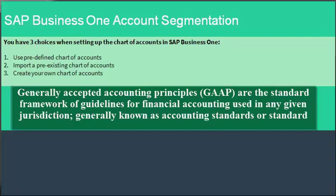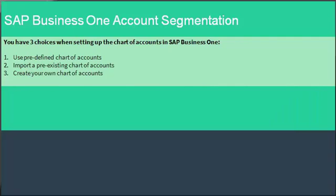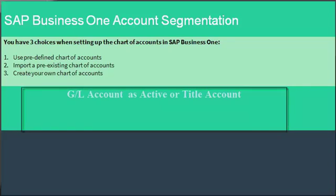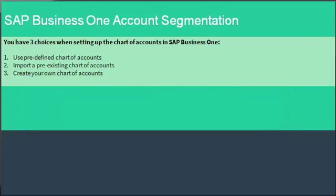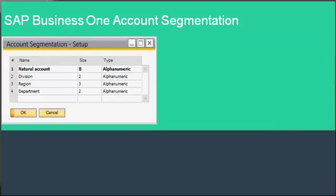These drawers, defined by SAP Business One and cannot be changed, organize your accounts by level in a logical fashion appropriate for financial accounting and reporting. In the Chart of Accounts window, SAP Business One asks you to characterize every GL account as either a title account or an active account and identify its level, because only active accounts can be posted. A title account summarizes all balances of each active account below it.